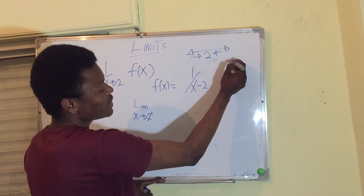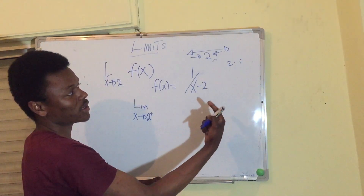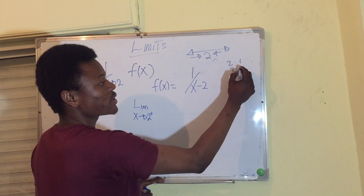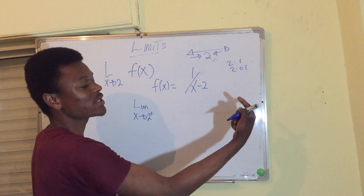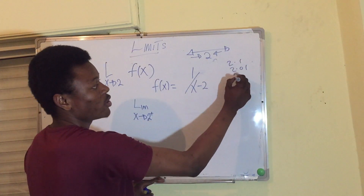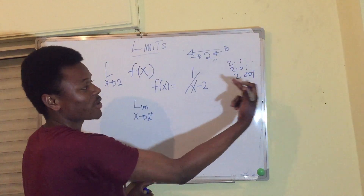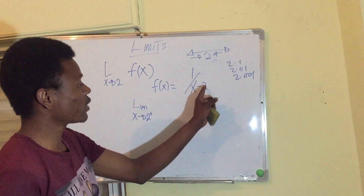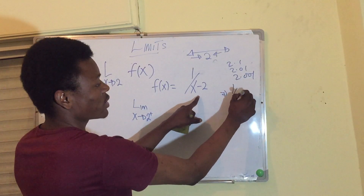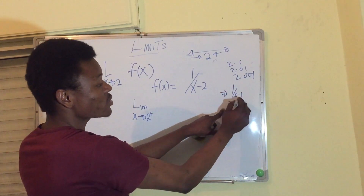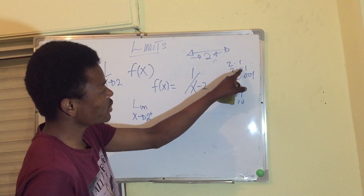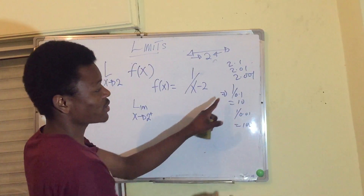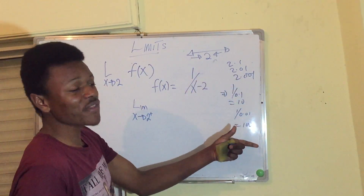From the positive direction, let us try 2.1: that gives 1/0.1. Then 2.01, getting closer to 2, gives 1/0.01. Then 2.001 gives 1/0.001. So 1/0.1 is of course 10, and the values keep growing larger.